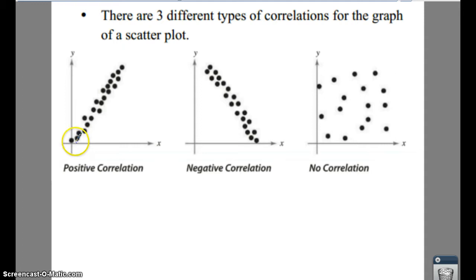So if you have some data that is going up from left to right, then that means you're going to have a positive correlation.